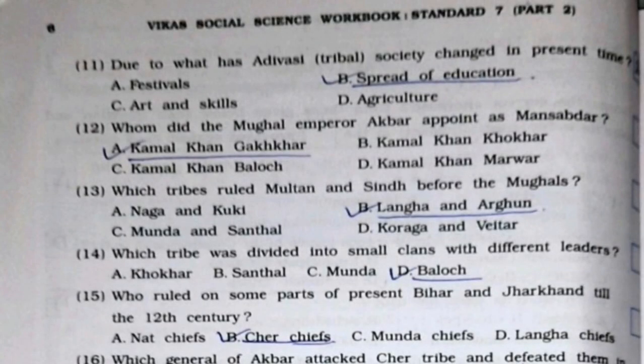Eleventh: Due to what has Adivasi or tribal society changed in present time? It's option number B, spread of education. Twelfth: Whom did Mughal emperor Akbar appoint as Mansabdar? It's option number A, Kamal Khan Gakkar. Thirteenth: Which tribes ruled Multan and Sindh before the Mughals? It's option number B, Langha and Arghun. Fourteenth: Which tribe was divided into small clans with different leaders? It's option number D, Baloch.